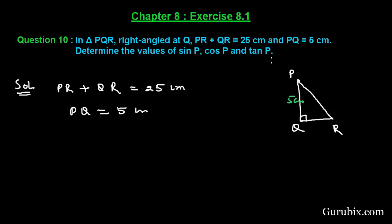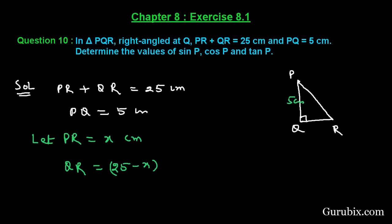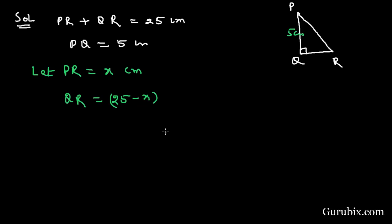So let PR equals x centimeters. Therefore QR equals 25 minus x centimeters. And now we shall apply the result that is PR squared equals PQ squared plus QR squared.